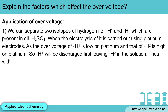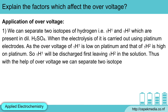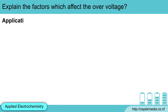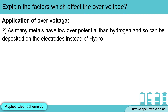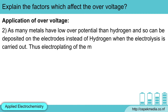Thus, with the help of overvoltage, we can separate two isotopes of hydrogen. Second, as many metals have lower overpotential than hydrogen, they can be deposited on the electrode instead of hydrogen when electrolysis is carried out. Thus, electroplating of metals can be done easily.